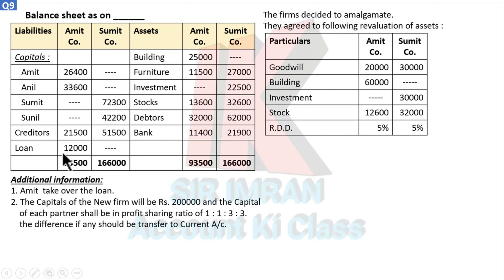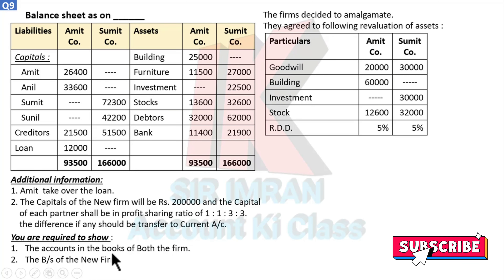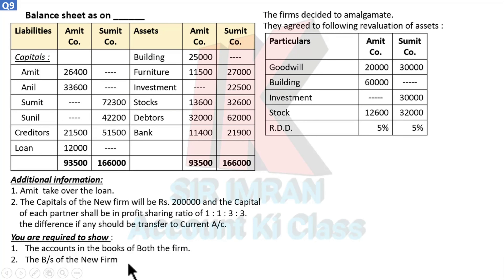Remember: do not include the loan in purchase consideration. The capital of the new firm is two lakh, and the capital of each partner shall be in profit sharing ratio 1:1:3:3. The difference, if any, should be transferred to current account. Both cash and current adjustments have been done in previous sums; today we adjust in current account. One important point: goodwill return-off is nil here. You are required to prepare accounts in the books of both firms — realization, partners' capital, new firm accounts — and finally a balance sheet.